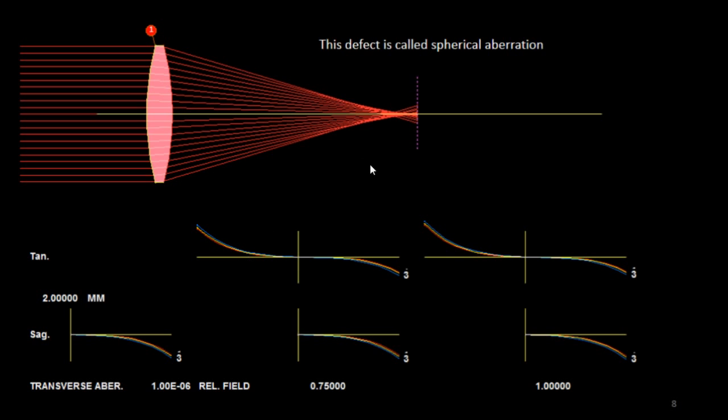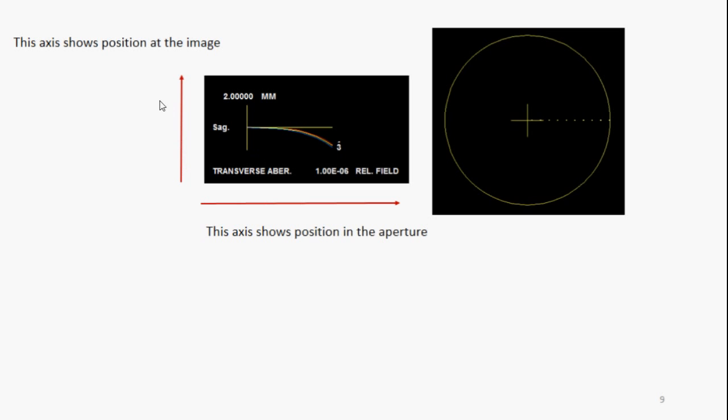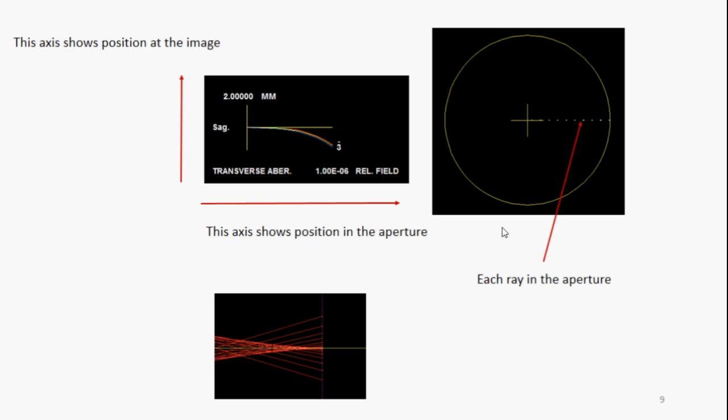This defect is called spherical aberration. And here's a very convenient way to picture it. And here's how that works. If you look at this picture, this axis shows the position in the aperture. This axis shows the position of the image. Now if you look at a bunch of rays coming sideways in the aperture like this, each ray in the aperture yields a point at the image. And we show it like this. It says that this ray at this part of the aperture has this much image error. As you can see it's a little out of focus there.